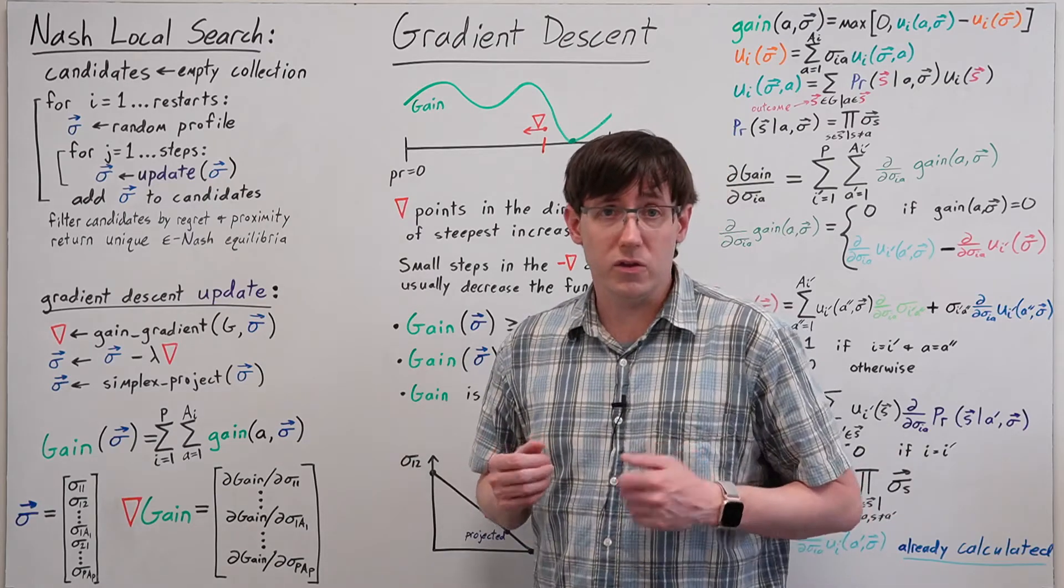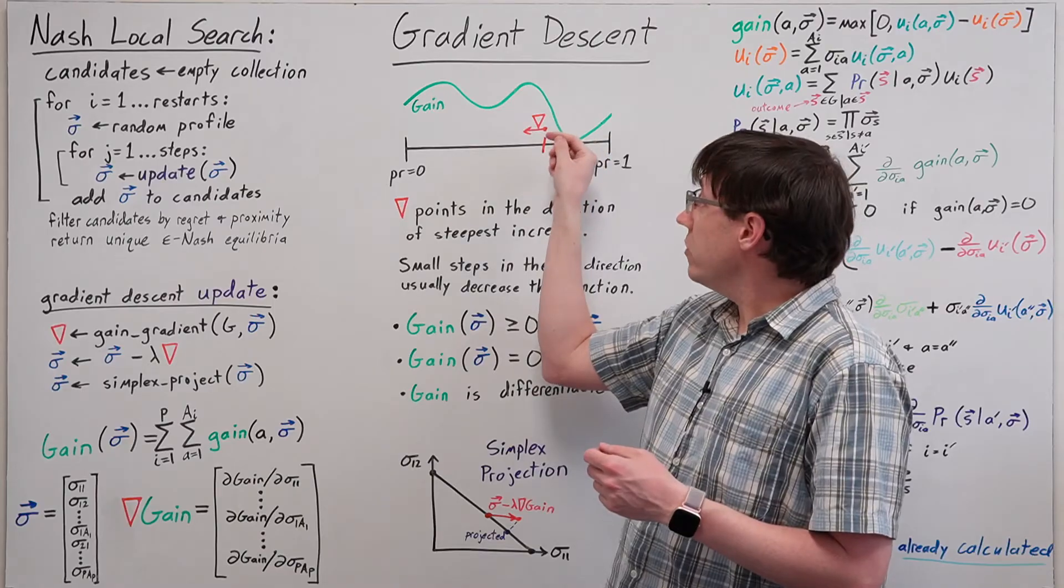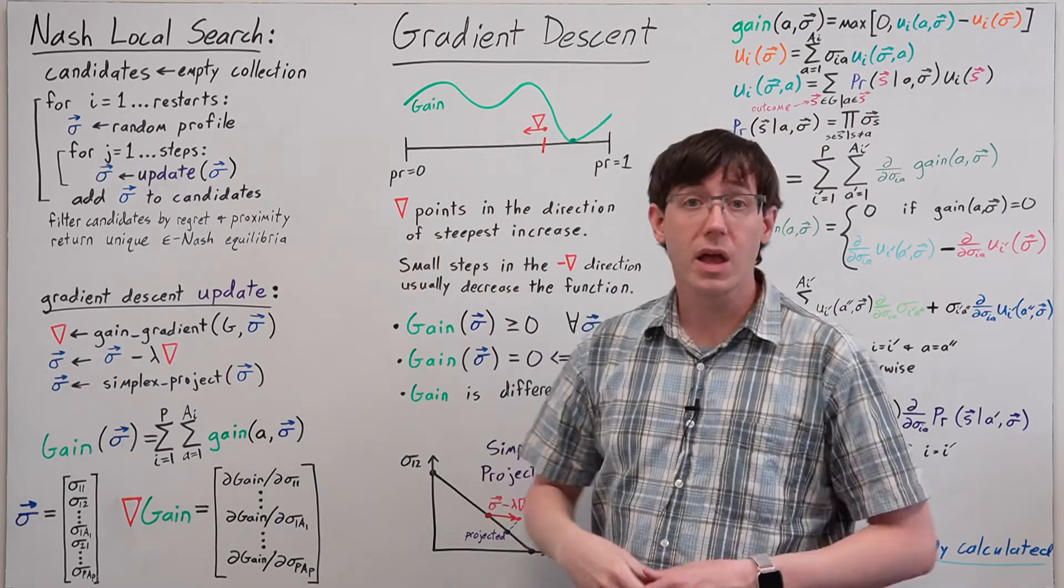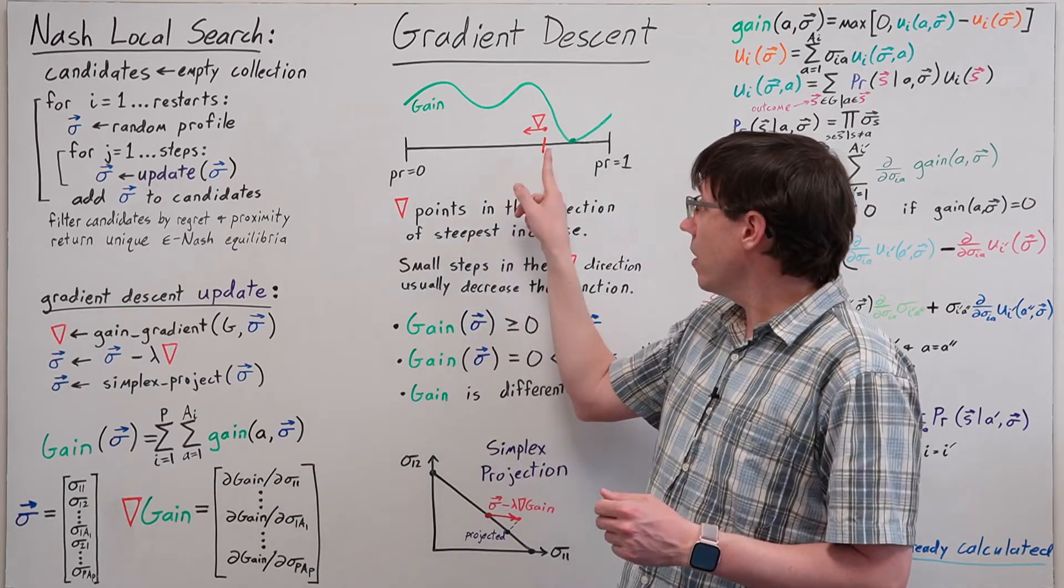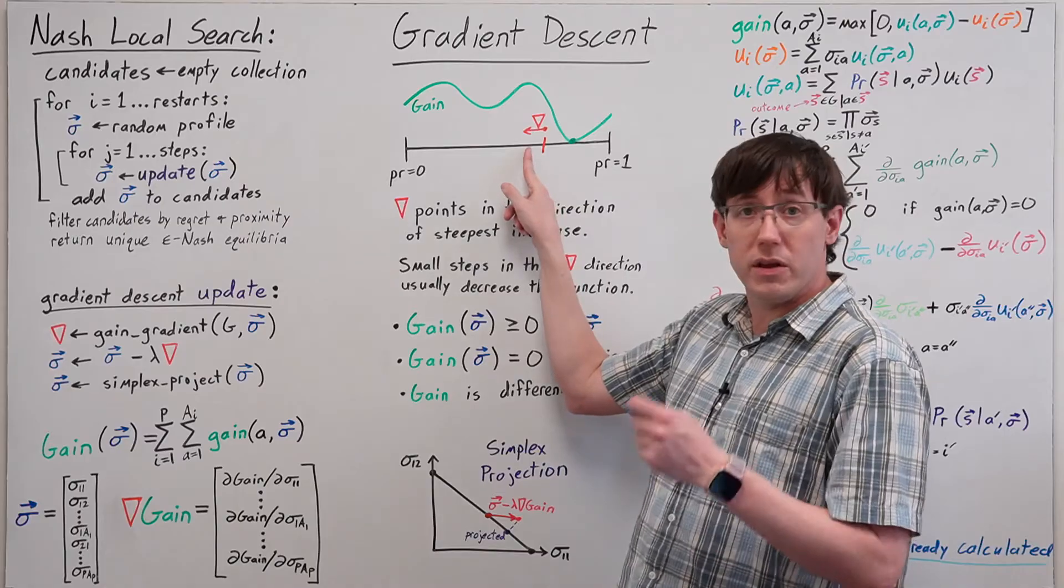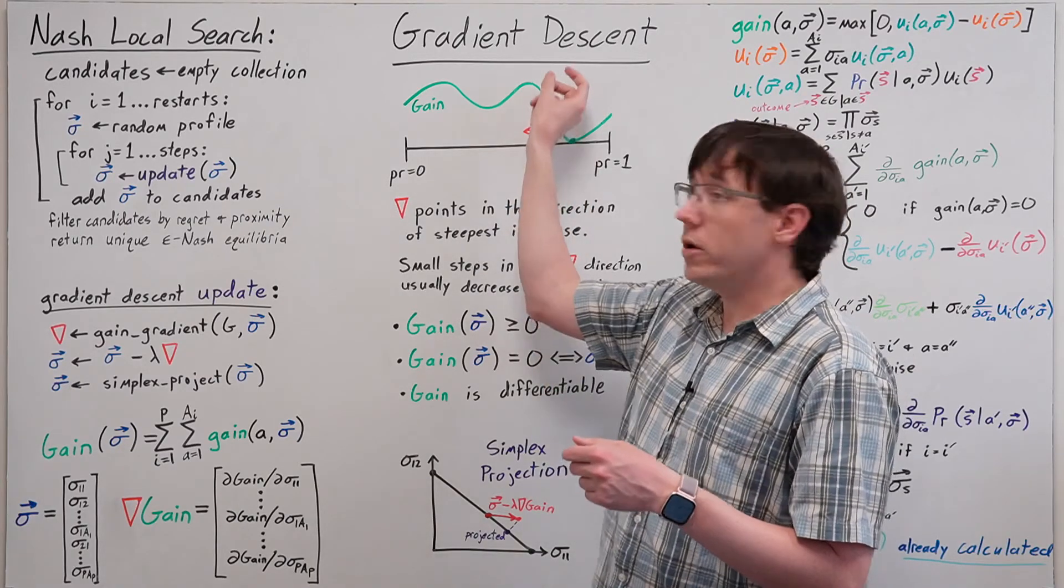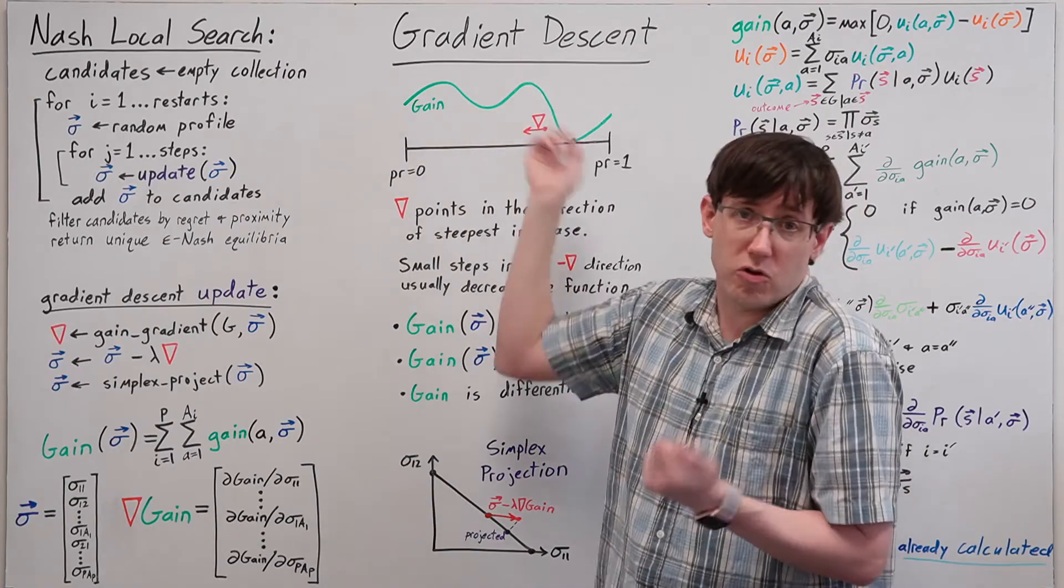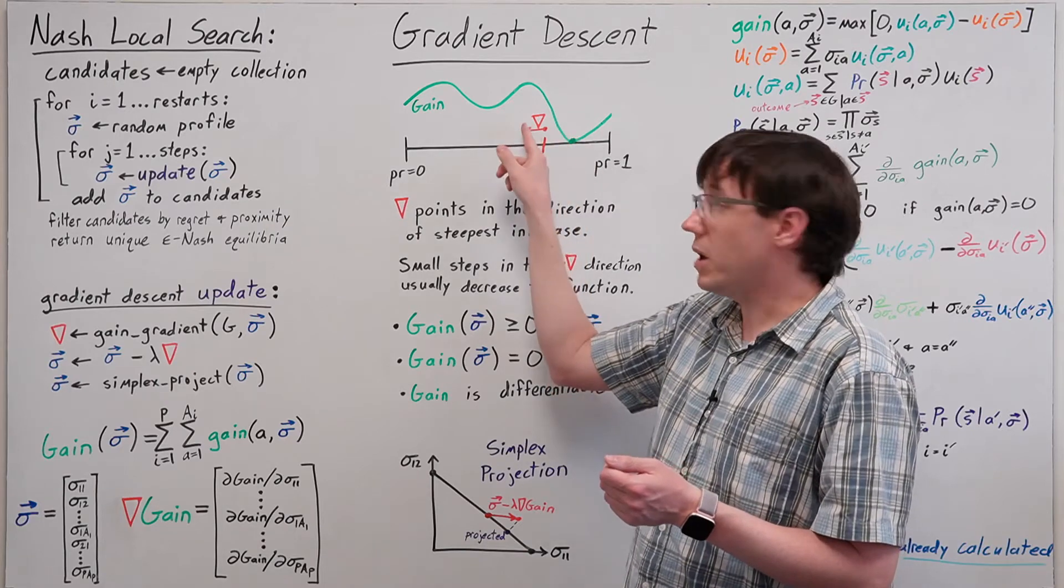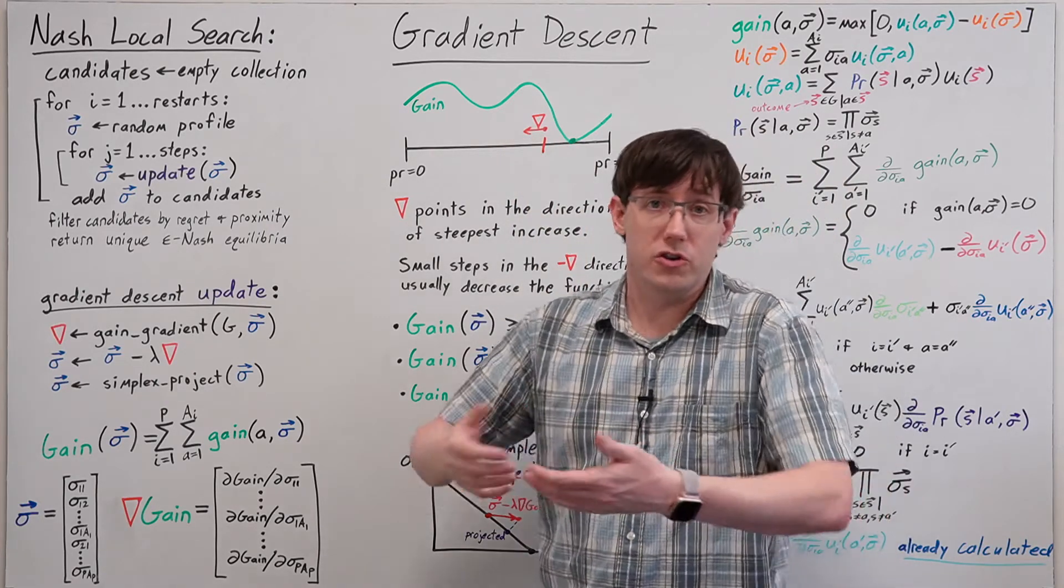From multivariable calculus, we know that a function's gradient always points in the direction of steepest local increase. That means if we evaluate the gradient at some input point and then take a small step in the direction the gradient is pointing, the output of the function will usually increase. Likewise, a small step in the opposite direction given by minus the gradient vector will usually cause the function to decrease.